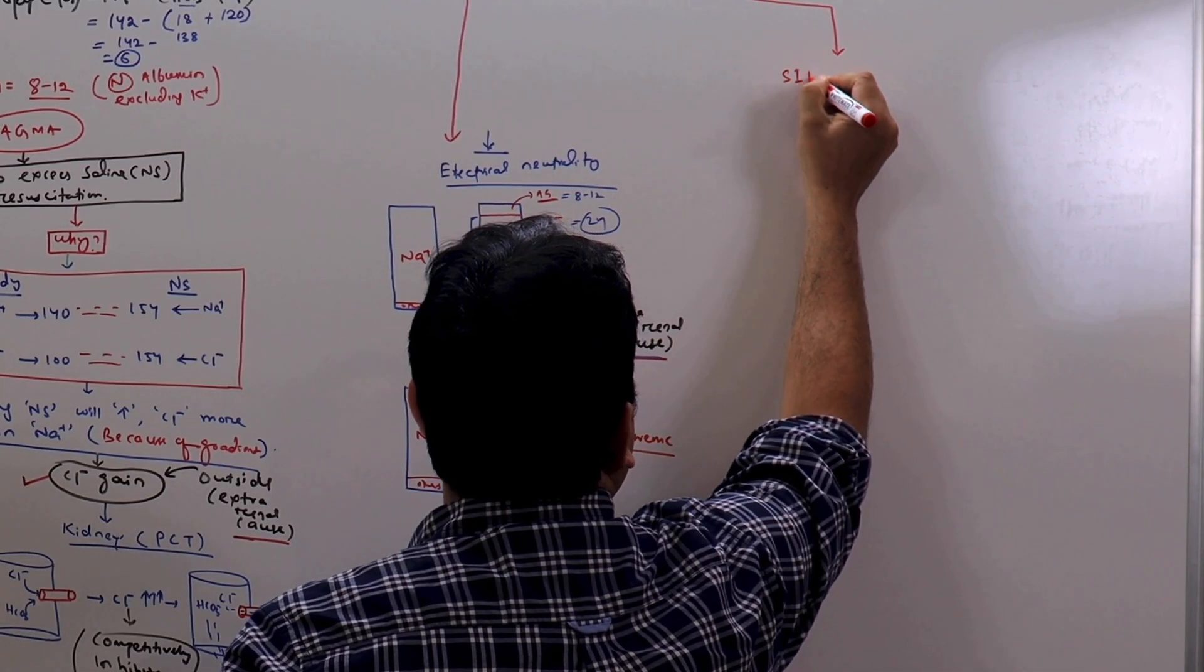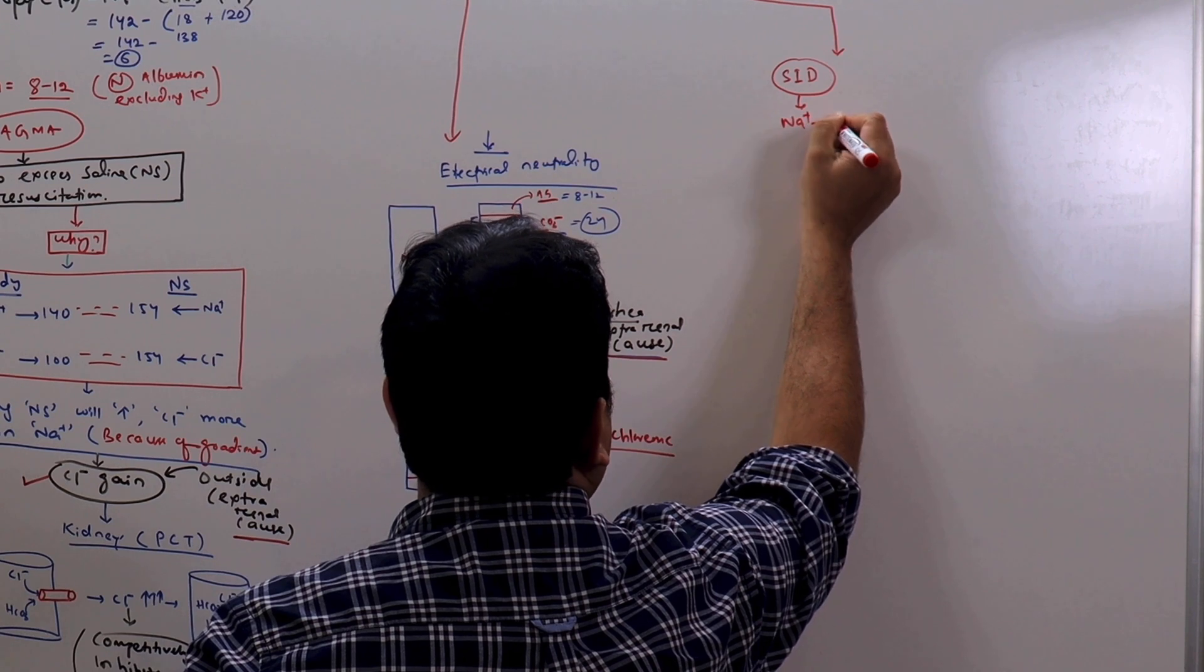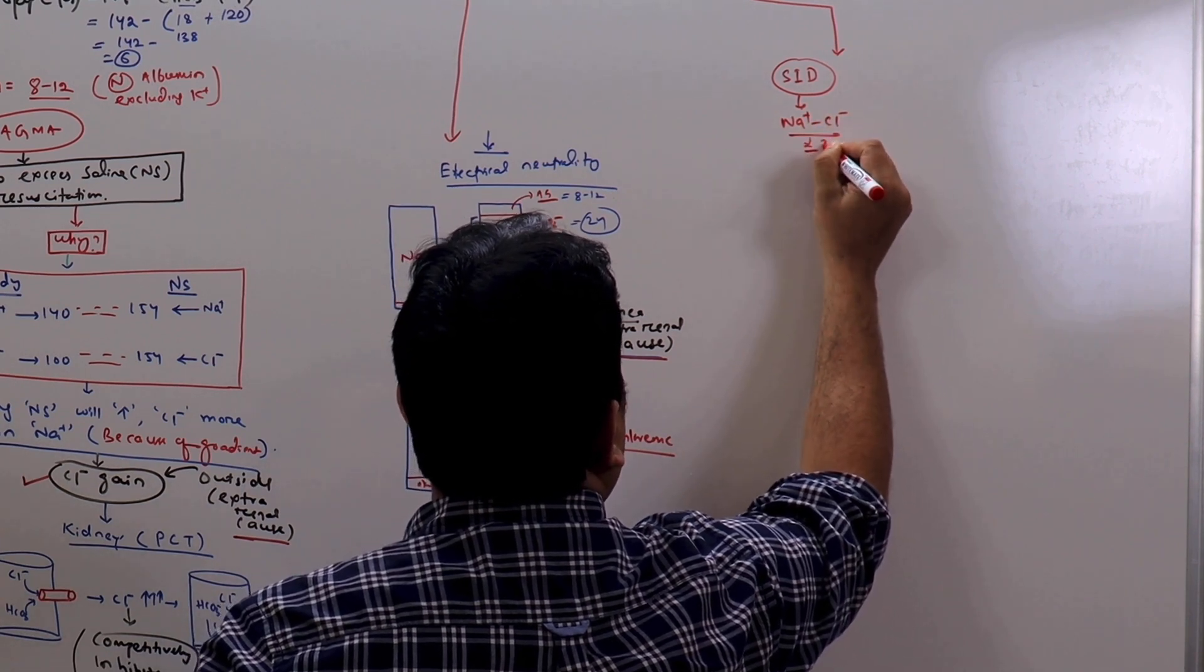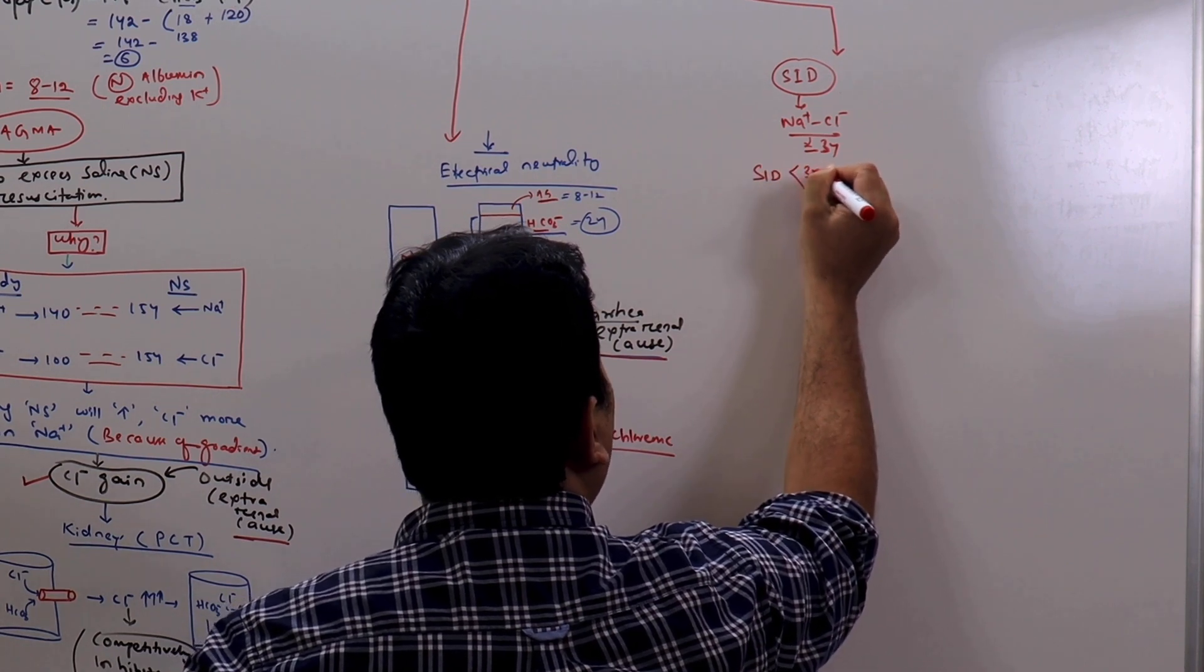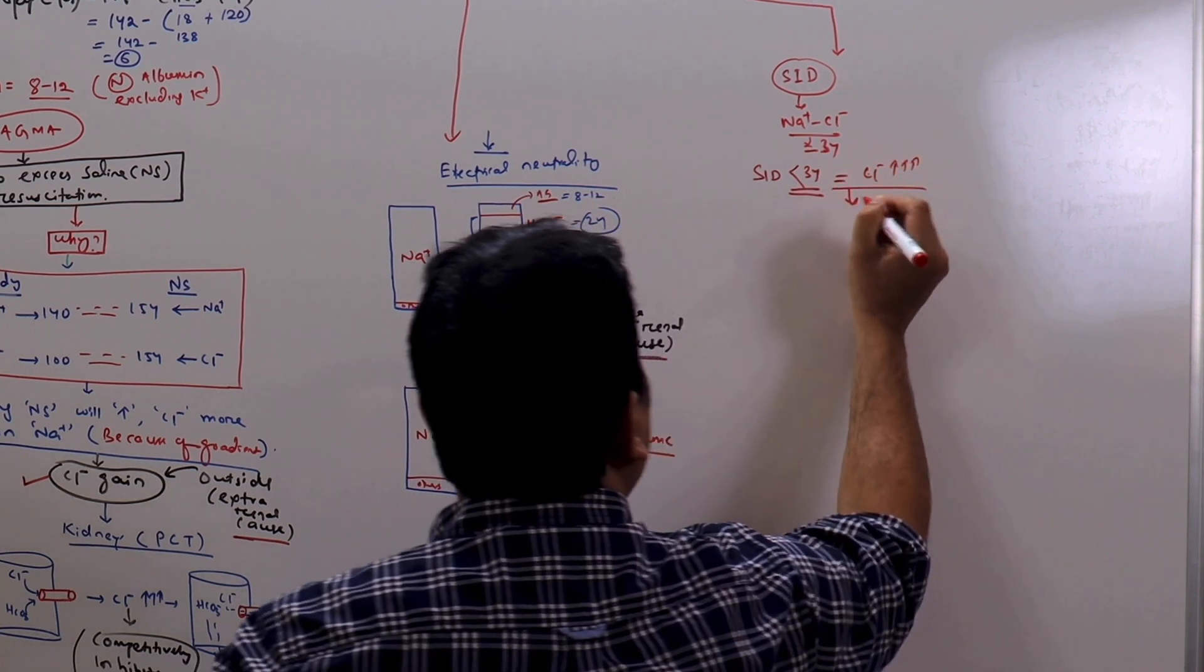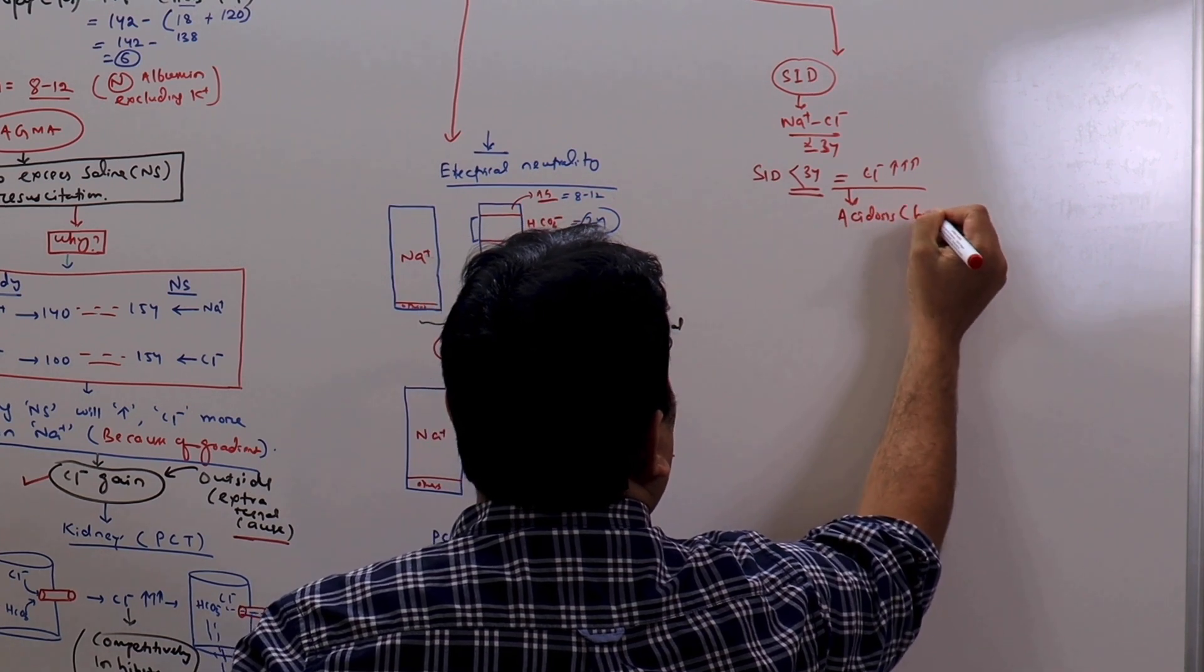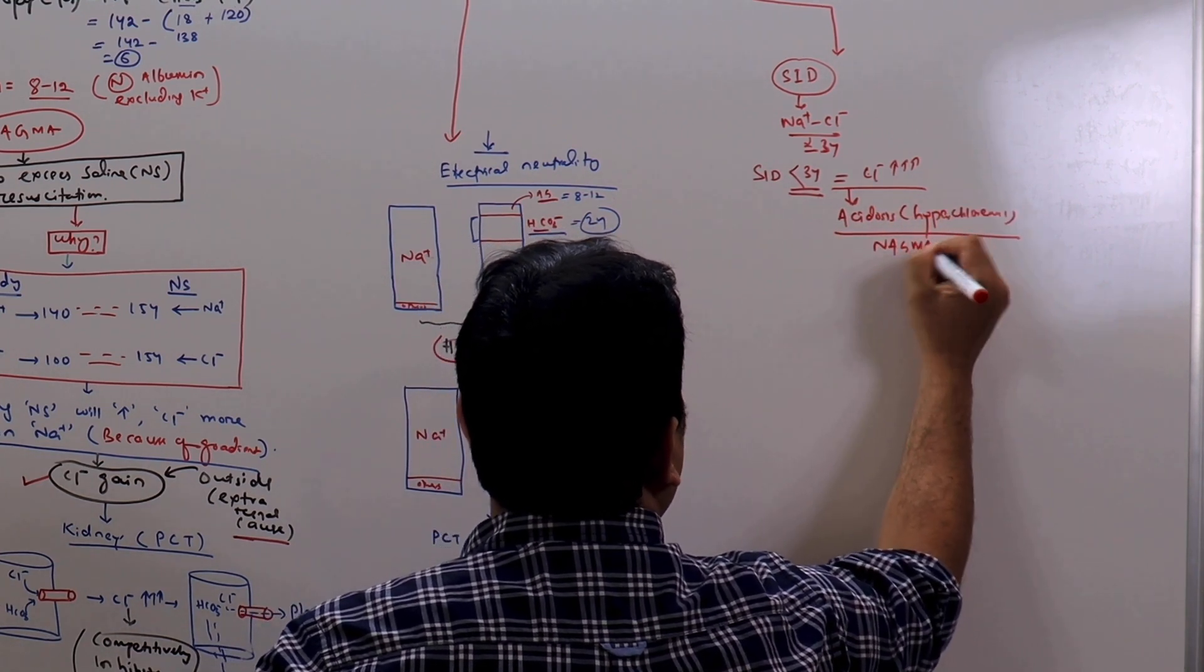There is another method to quickly diagnose. That is called standard ion difference. That is sodium minus chloride. This is normally around 34. Whenever the standard ion difference is less than 34, that suggests chloride has increased. This translates into acidosis, hyperchloremic or normal anion gap metabolic acidosis.